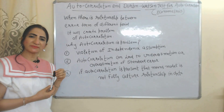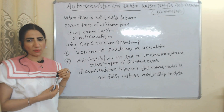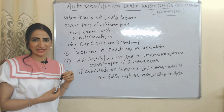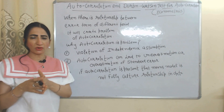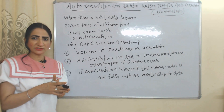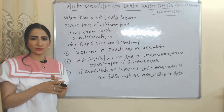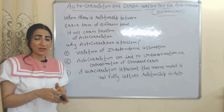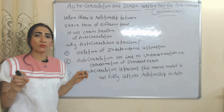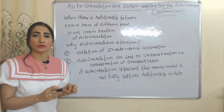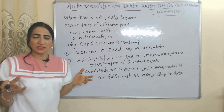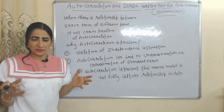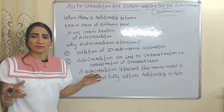Hello everyone, my name is Minis. Today we are going to talk about the Durbin-Watson test for autocorrelation. First of all, what do you mean by autocorrelation? In a regression model, we assume the error term of one period is not related to the error term of any other period.